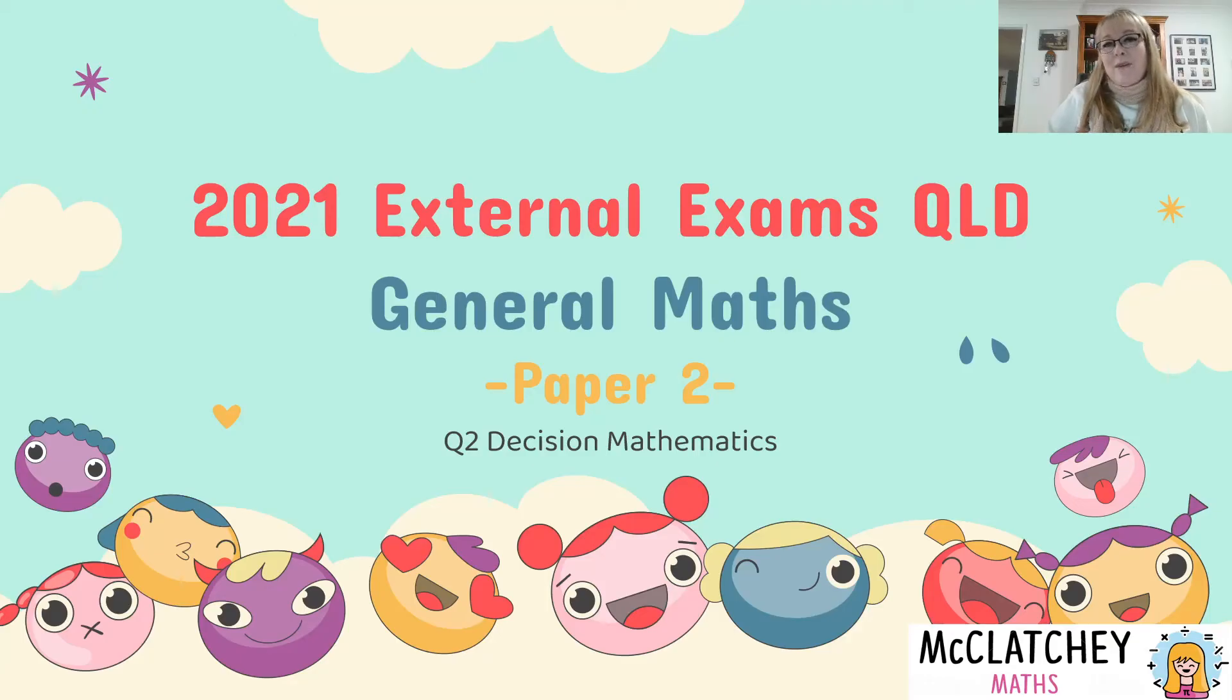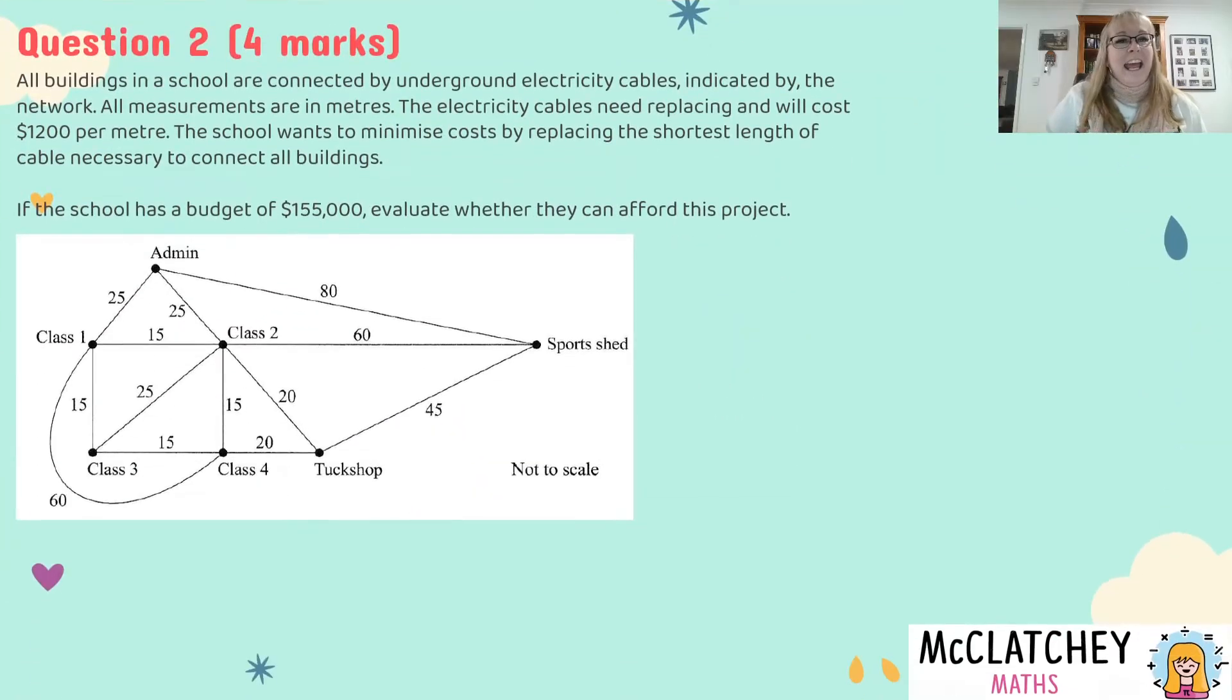Question two was worth four marks. All buildings in a school are connected by underground electricity cables indicated by the network. All measurements are in meters. The electricity cables need replacing and will cost $1,200 per meter.